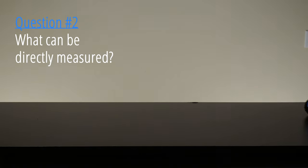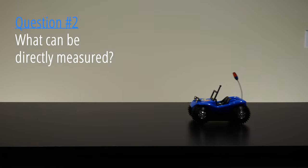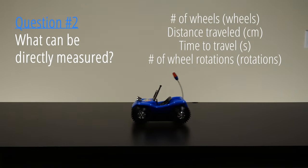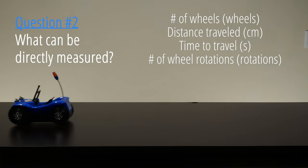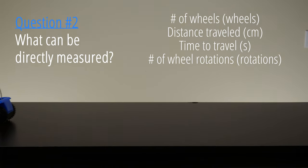Next, ask the students to identify what can be directly measured about the toy car. Also list these on the board. For each direct measurement, ask the students to identify what measuring tool they would use and what the unit of measure would be. For example, distance could be measured using a meter stick and the unit of measure would be inches or centimeters.